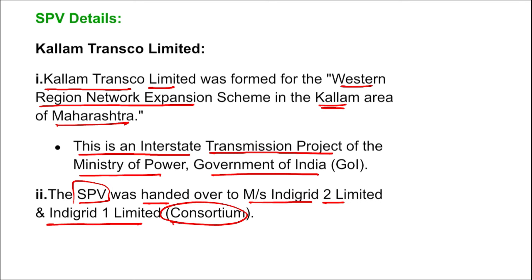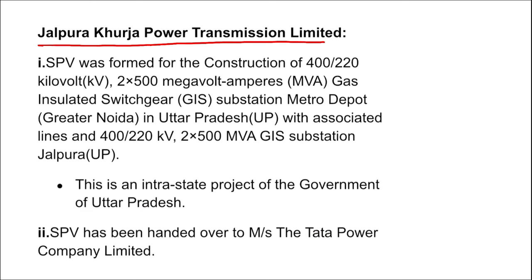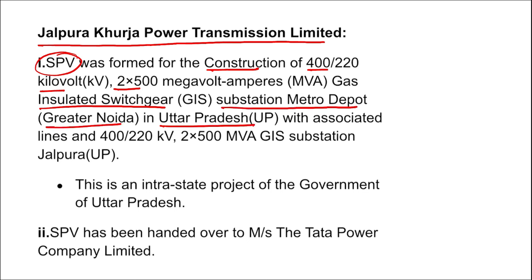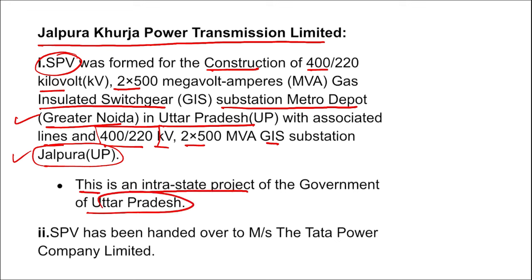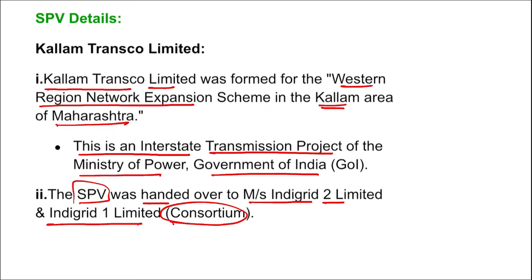The second — Jalapura Khurja Power Transmission Limited — this SPV was formed for the construction of 400/220 kV and 2×500 MVA gas insulated switchgear substation metro depot in Greater Noida, Uttar Pradesh, with associated lines and a 400/200 kV 2×500 MVA GIS substation in Jalapura, UP. This is an intrastate project of the Government of Uttar Pradesh. The SPV has been handed over to MS Tata Power Company Limited.